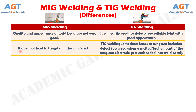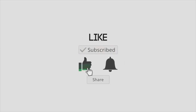Difference number 11: MIG welding does not lead to tungsten inclusion defect, whereas TIG welding sometimes leads to tungsten inclusion defect, which occurs when a melted or broken part of the tungsten electrode gets embedded into the weld bead.